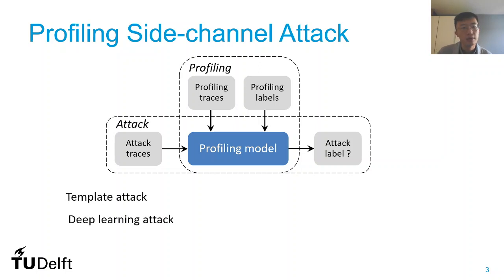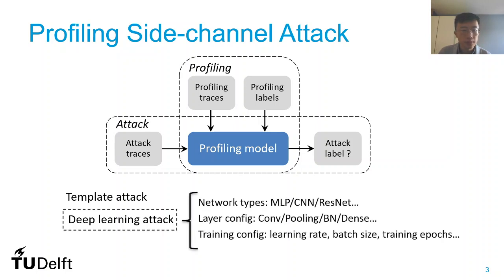There are two popular profiling Side Channel attacks: template attack and deep learning attack. The template attack is based on building the probability density function between different clusters. For deep learning attacks, it maps the relationship between traces and labels by training a deep learning model. However, training such a model is not easy — especially designing such a model is really a difficult task. Given that we have different types of datasets, we need to customize the deep learning model for each dataset, and it's really difficult to decide which hyperparameters or which network is better.